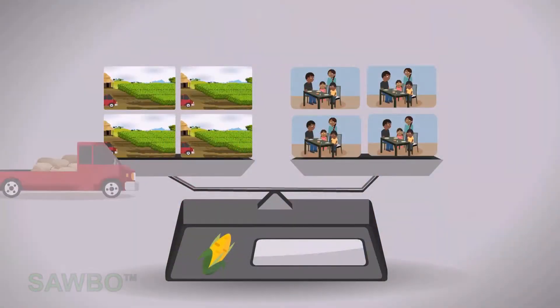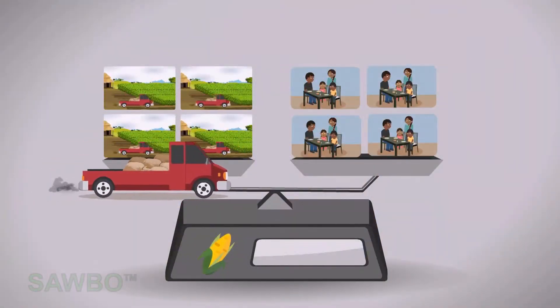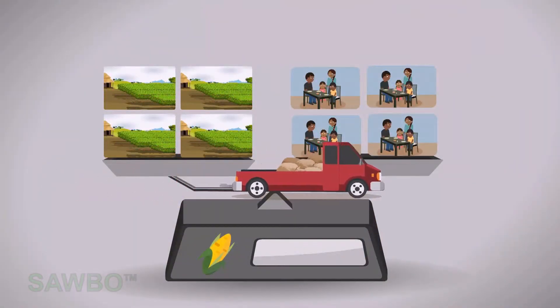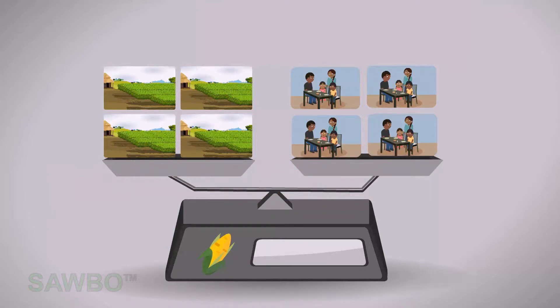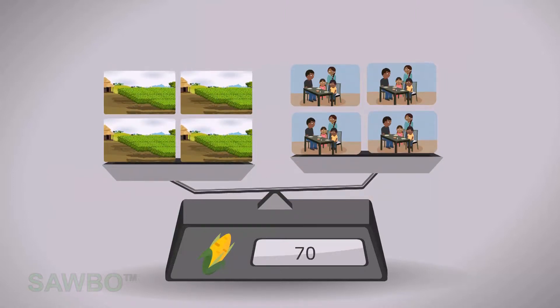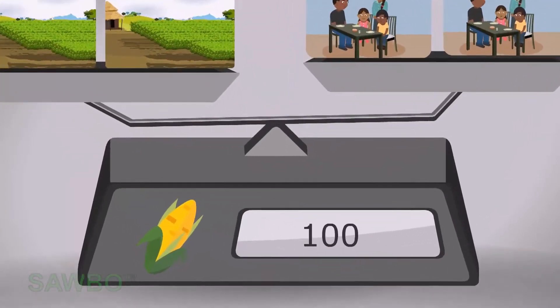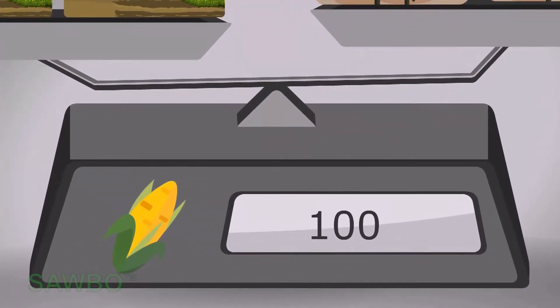The harvested maize is transported from the farmer's side to the consumer's side. We notice that supply and demand are in balance, and the indicator for the maize price marks 100 units for each bag of maize.